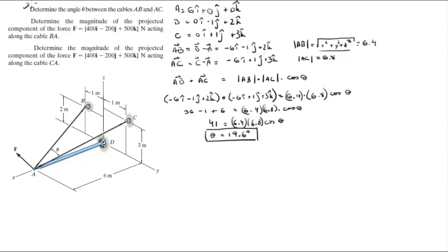And this is for the first part. Now for the second part, let me write down the Cartesian vector of this force because we're going to use it: 400I minus 200J plus 500K.